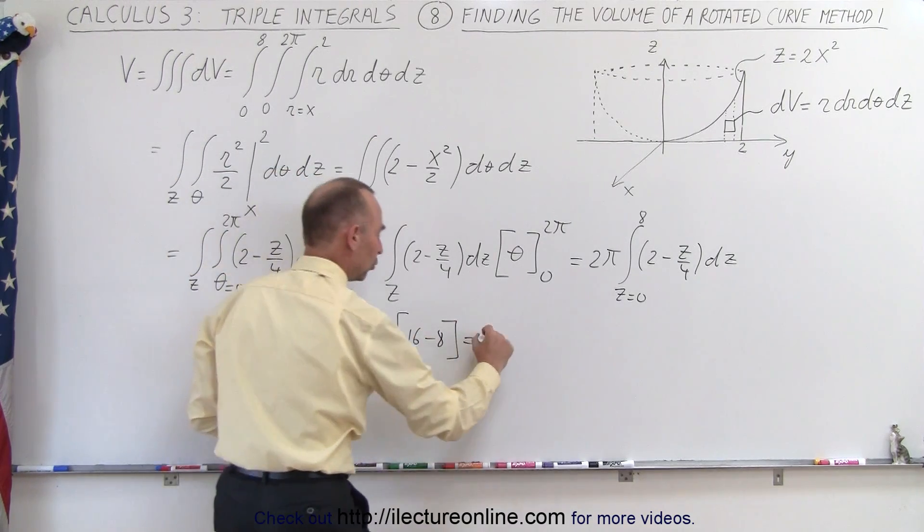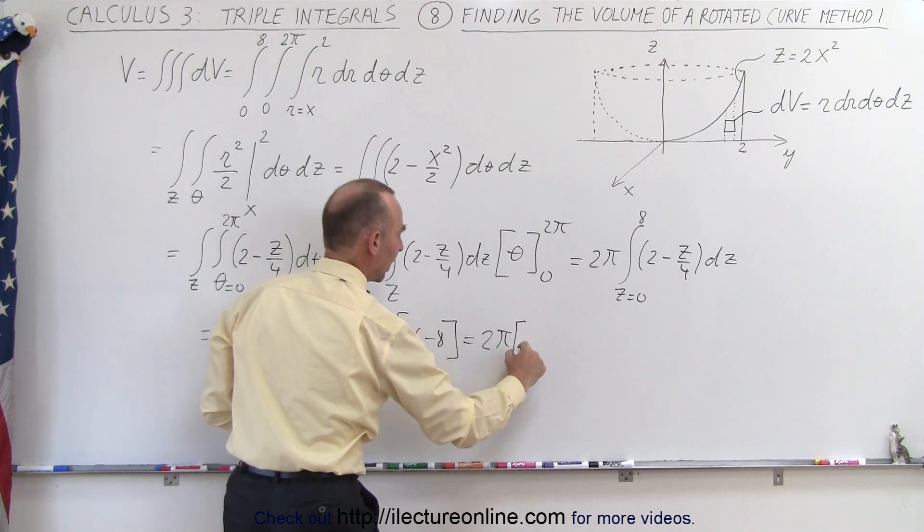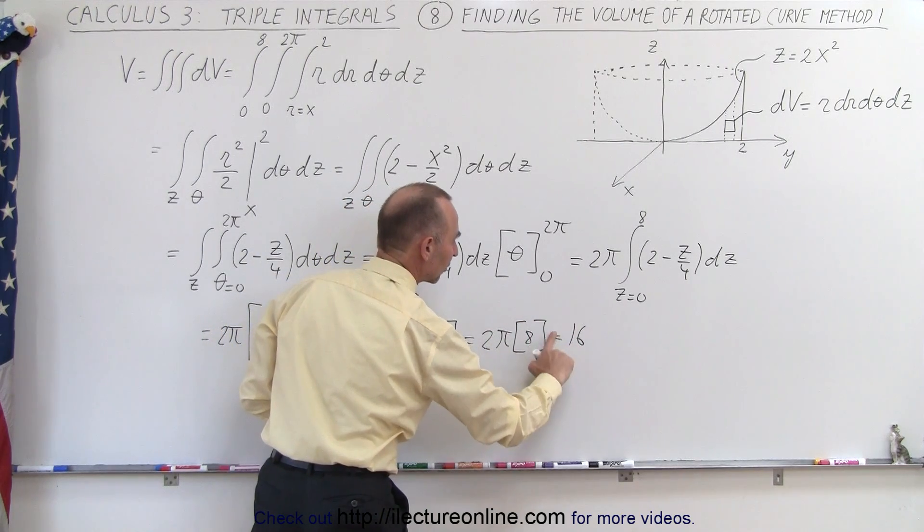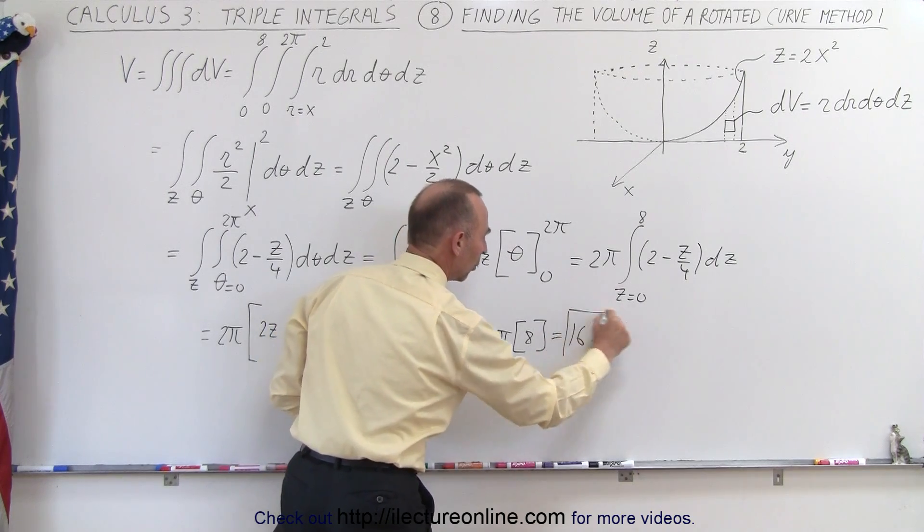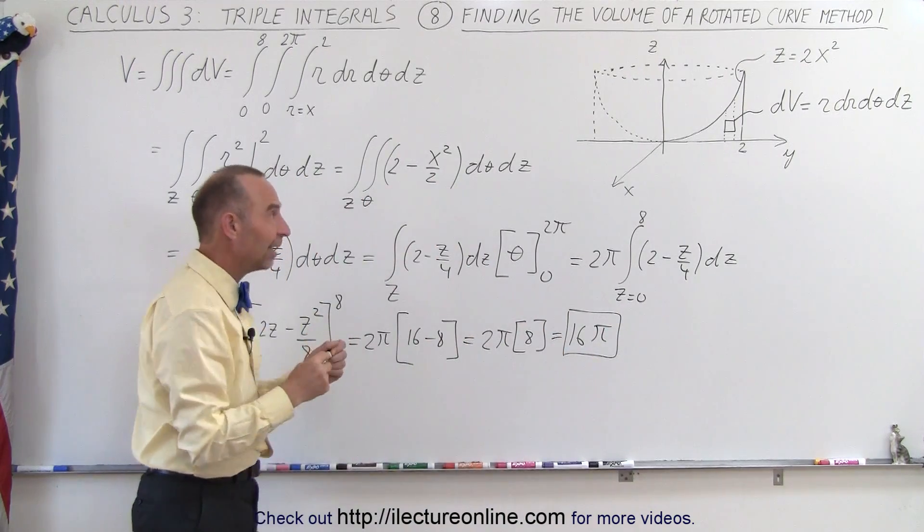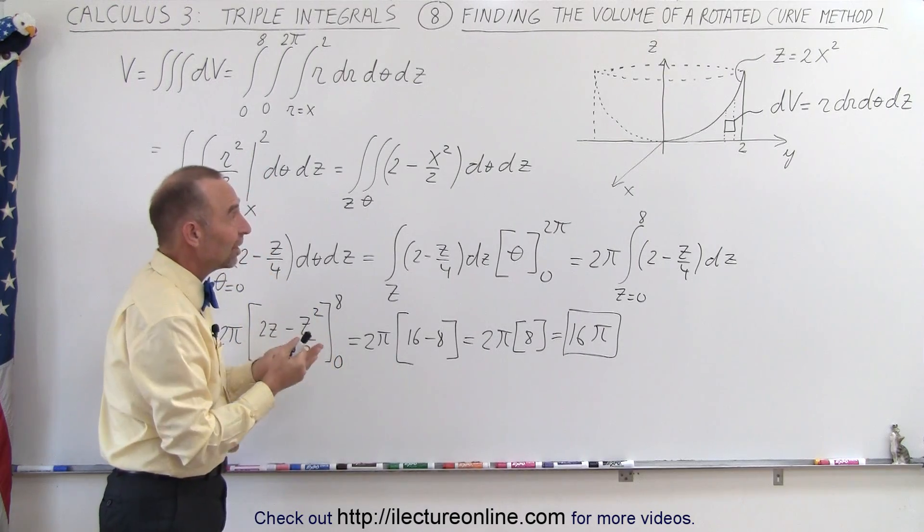So this becomes equal to 2π times 8, or this becomes equal to 16π, which is the volume of that interesting looking bowl.